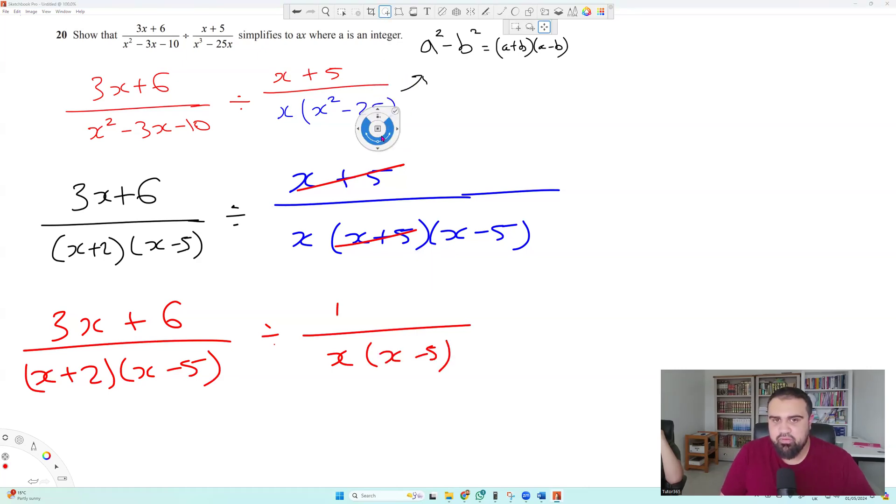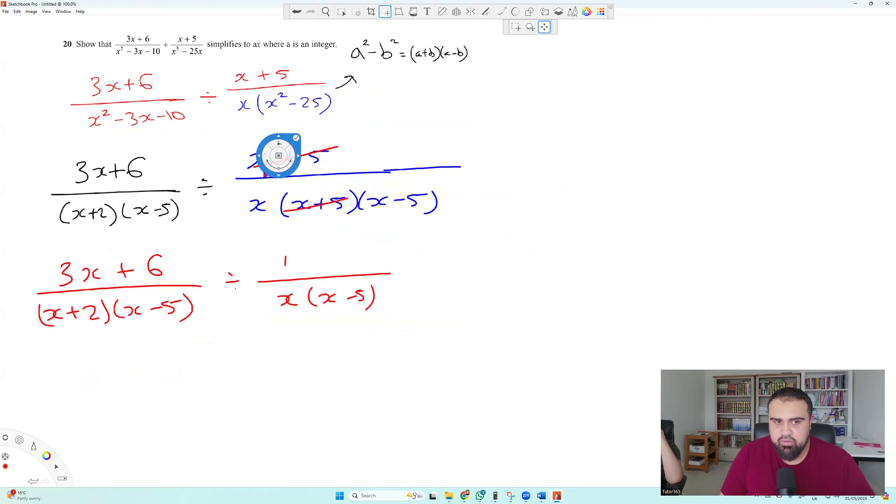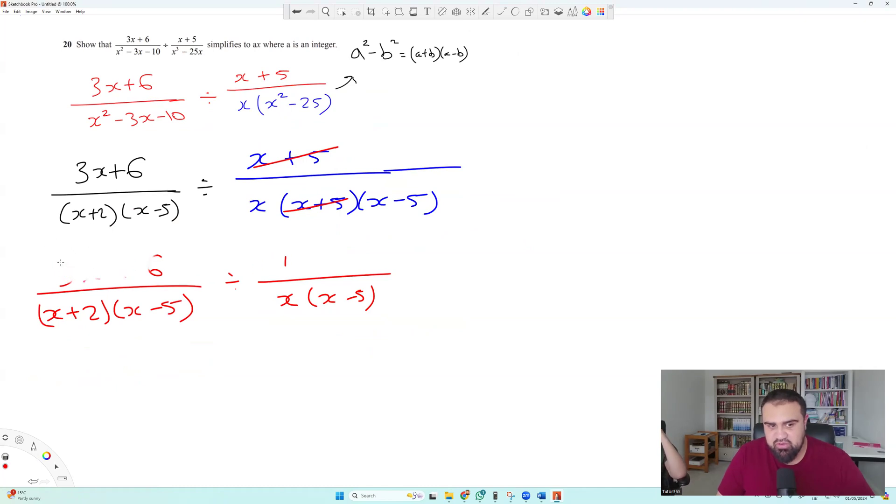It's 3x plus 2 in the brackets on top. Oh yes, we didn't even factorize the numerator here, did we? Yeah. So we can pull out 3, x plus 2, right? Then we canceled two of them out. Yeah, we can cancel these out. So now, look, I'm going to carry on here. We've got 3 over x minus 5 divided by 1 over x, x minus 5. So now what's the final step?